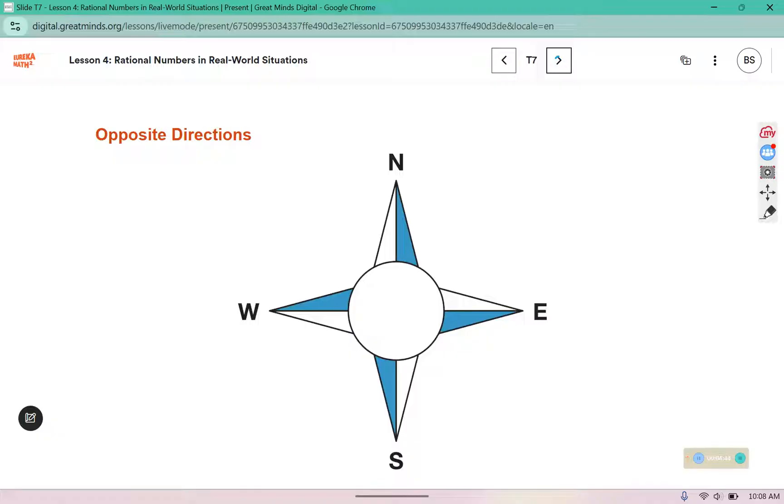Instead of just debt and fortune, we have other real world contexts for opposites. We have north as the opposite of south, we have west as the opposite of east. One of these, if we were to look at a horizontal number line, would represent negatives. So the west represents negative, and the east represents positive.